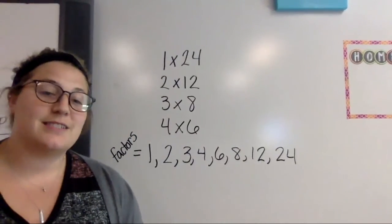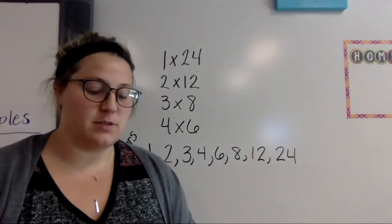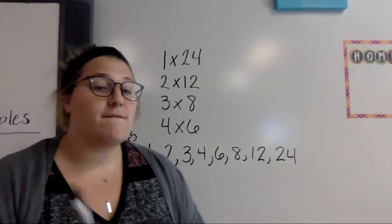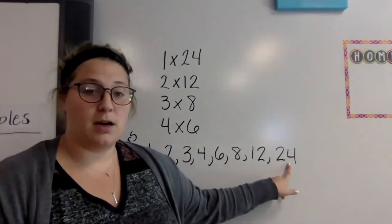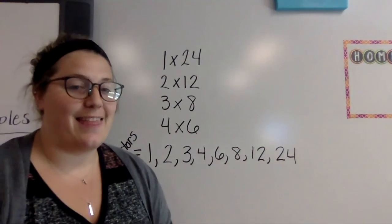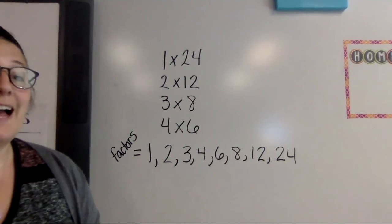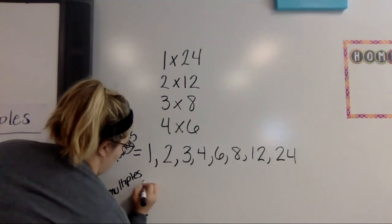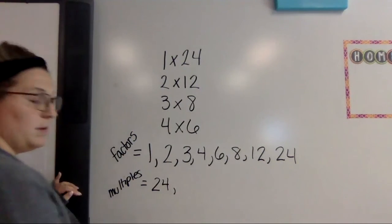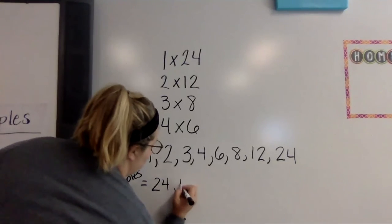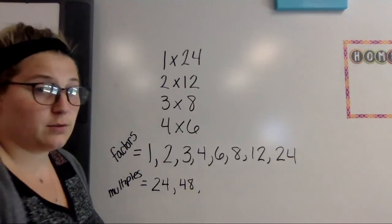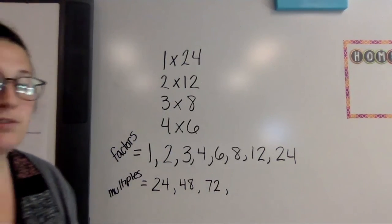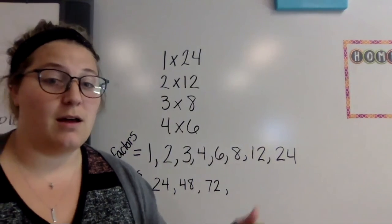So now that we've listed some factors of 24 let's think of multiples of 24. Some people can get this confused, get them mixed up. A factor is what can make our number. A multiple is what you get when you count by that number or multiply it by each number. So multiples of 24 would be 24 because that's times 1, 48 is times 2, 72 that's times 3. And we keep going up from there and go on and on and on.